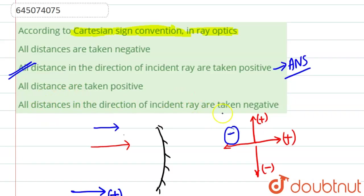All distances in incident data are taken as negative. This is also absolutely wrong. So our answer is option number B. Got it, thank you.